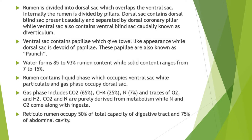The functions of rumen are to allow mechanical, chemical and microbial simplification of food, breaking it into small particles. It also acts as a storehouse of ingested food material and undergoes fermentation of food due to the microbial fauna and flora present in the rumen. The microorganisms within the rumen also cause the synthesis of proteins and vitamins, and so themselves are the source of proteins for the organism.